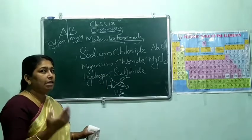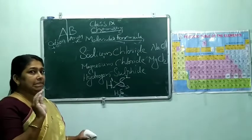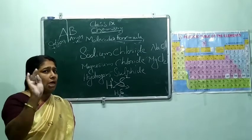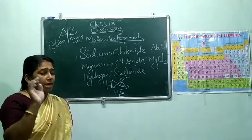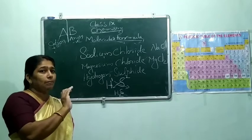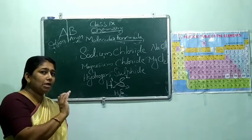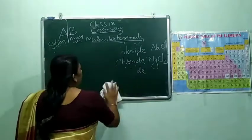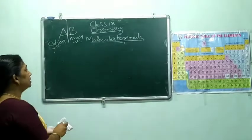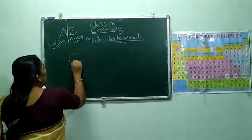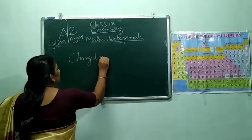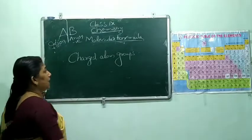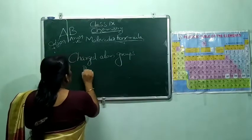Two things essential: first, thorough knowledge of the symbol of elements; second, thorough knowledge of the valency of elements. Third: always remember that the positive part (cationic part) should be written first, then only the negative part (anionic part). Now, ions I told you — charged atoms. There are also charged atom groups, and they are called polyatomic ions.